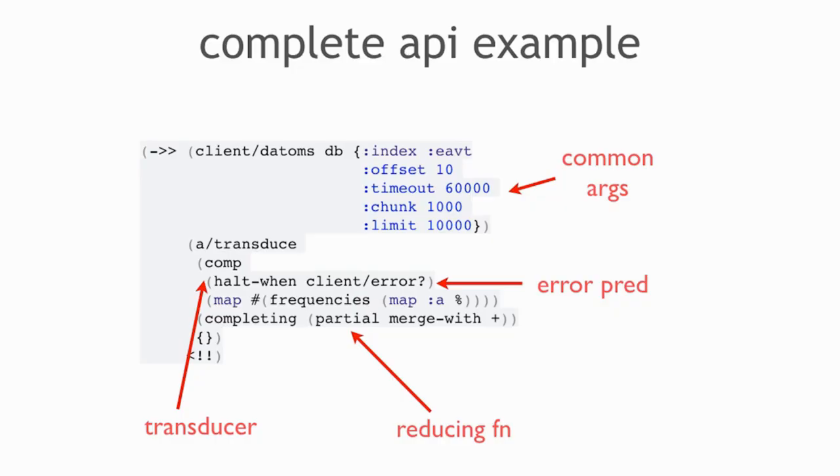The second thing we're going to do is map a frequency table on all the attribute values. If we have 1,000 values in the chunk, all 1,000 have an attribute value — the number that represents the attribute. We call frequencies on that, producing a frequency table as a map: attribute 74 had 10, attribute 86 had 15, and so on. Then we use mergeWith — a Clojure core library function — to merge frequency tables across chunks. This tells us the shape of our data: what attributes are present in the system.